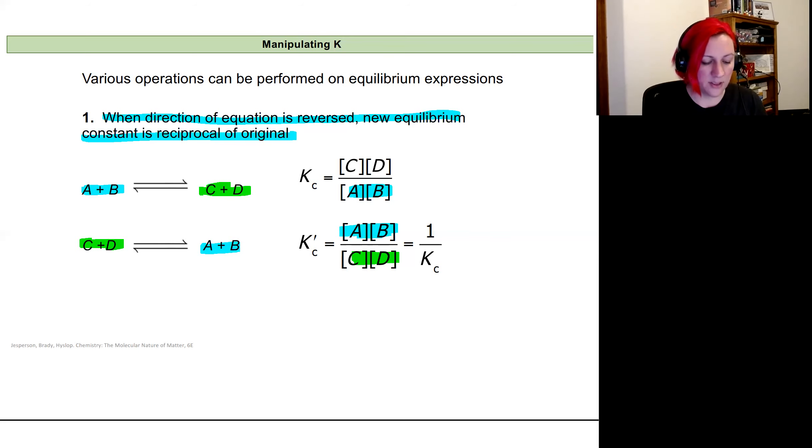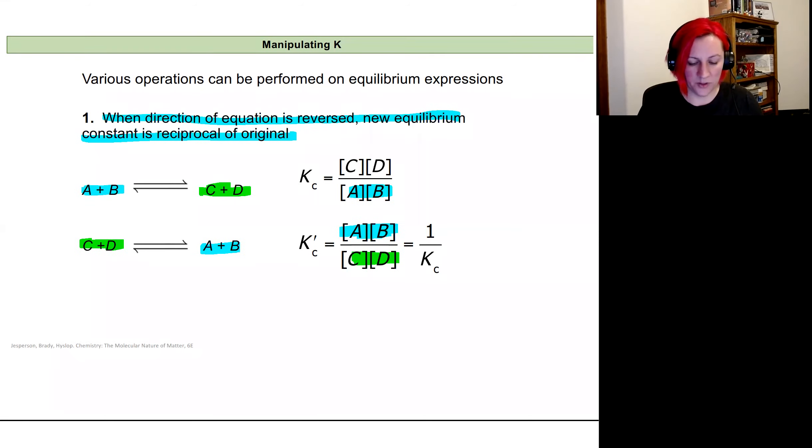We can set up this relationship where if I'm looking at one reaction and I flip it and consider my products now my reactants, I just take the inverse of my K value.